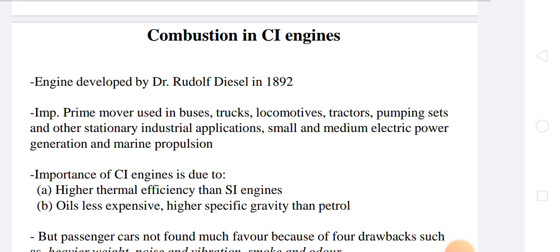In CI engines, the fuel is injected into the combustion chamber after compression of air is completed. In SI engines it was injected before. In CI engines, due to the excessively high temperature and pressure of the compressed air, the fuel is injected in atomized form and burns on its own.